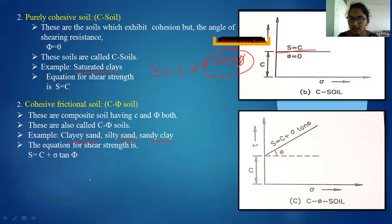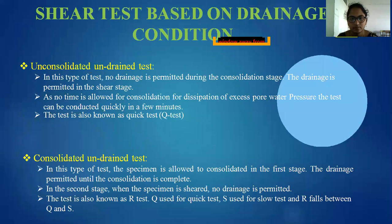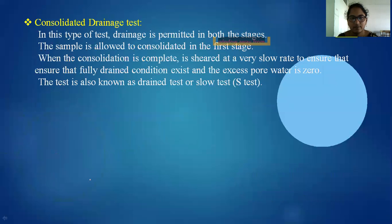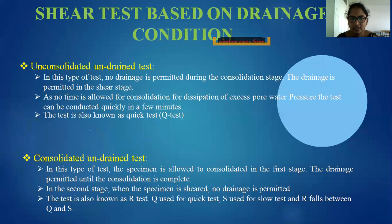We have already discussed S equals C plus sigma tan φ, where both C and phi values are present. Based on drainage conditions, we have different test types: unconfined compression, unconsolidated undrained test, consolidated drained test, and unconsolidated undrained test. These are the three different drainage conditions.